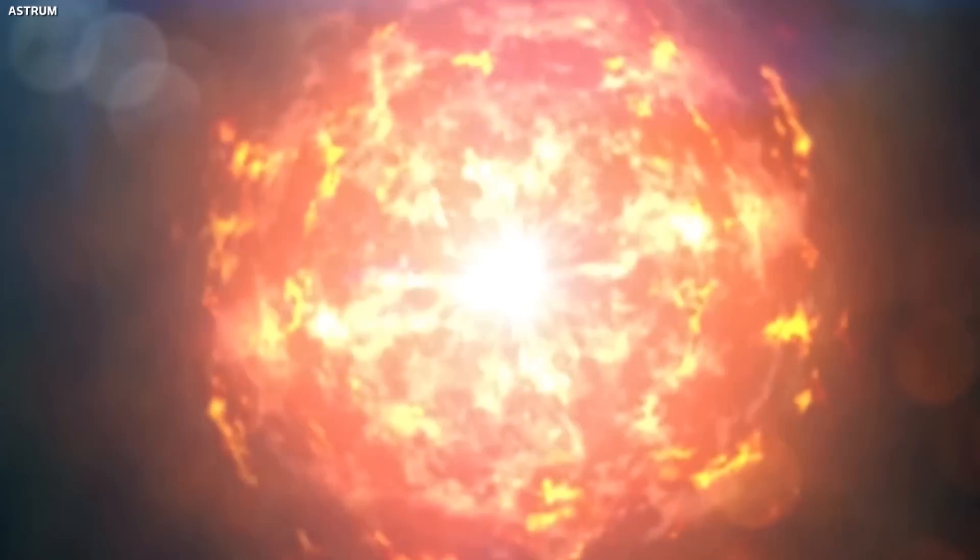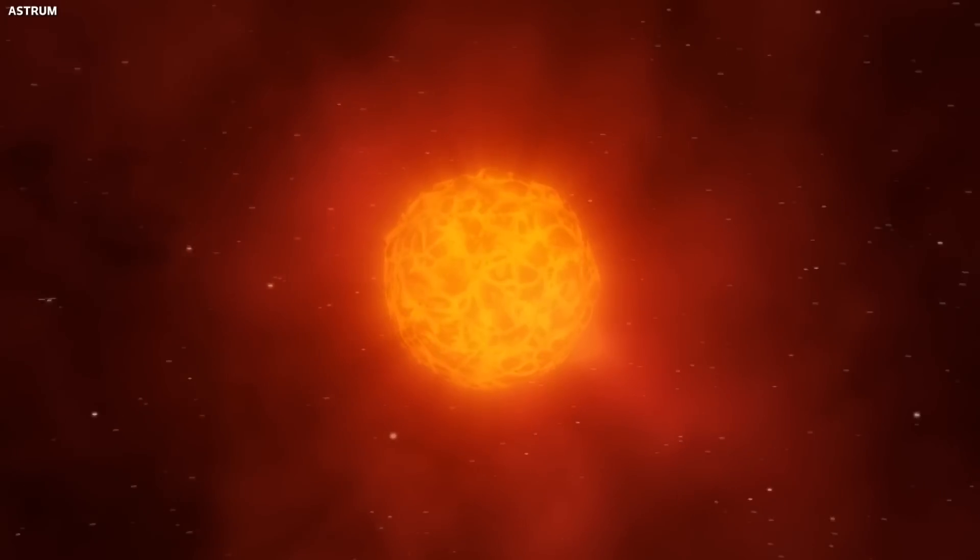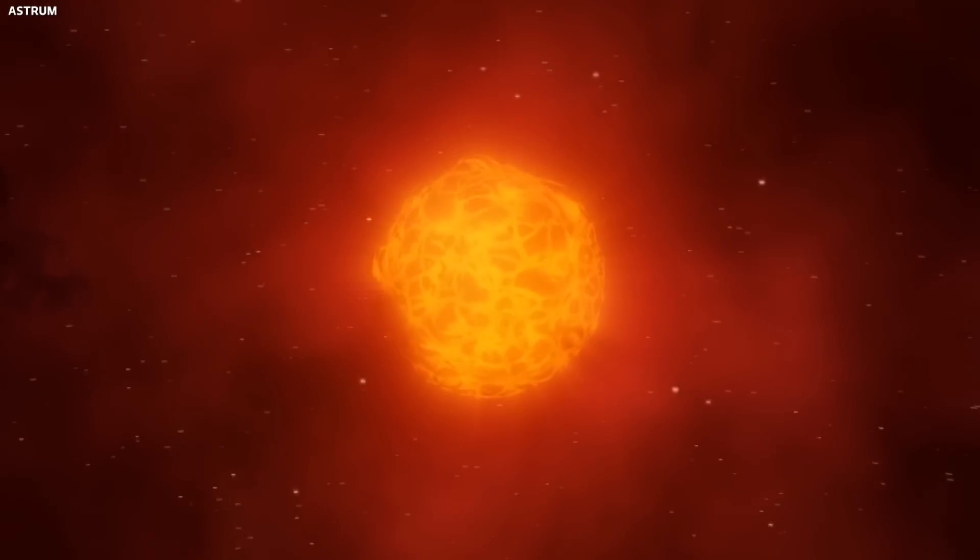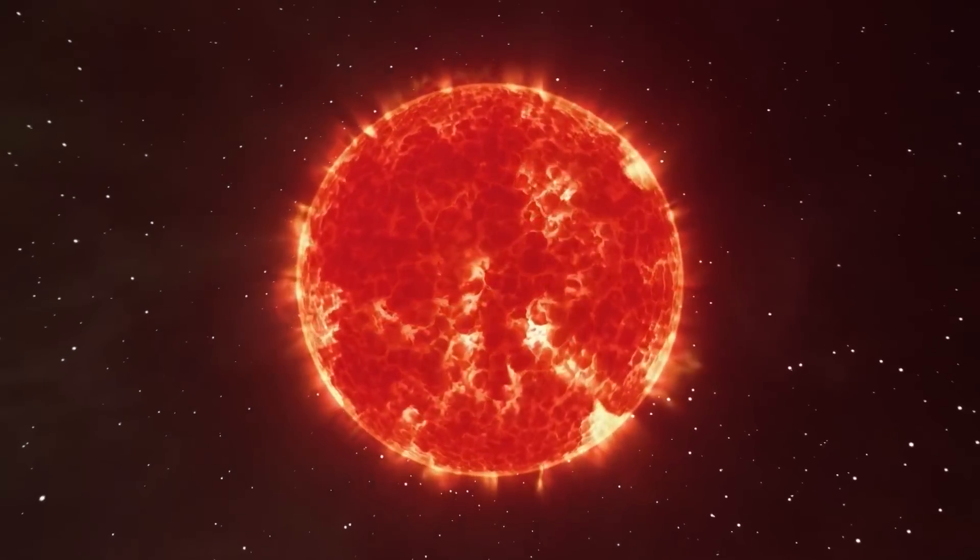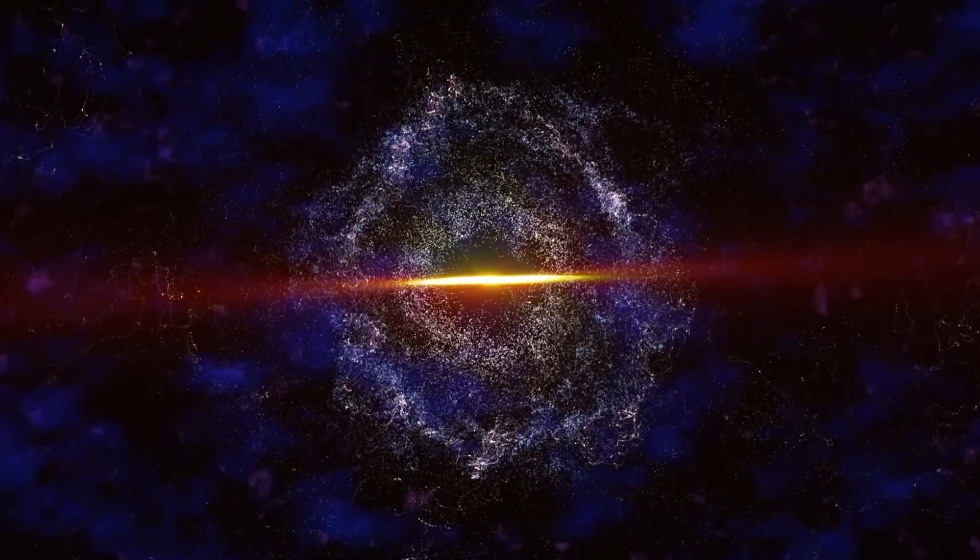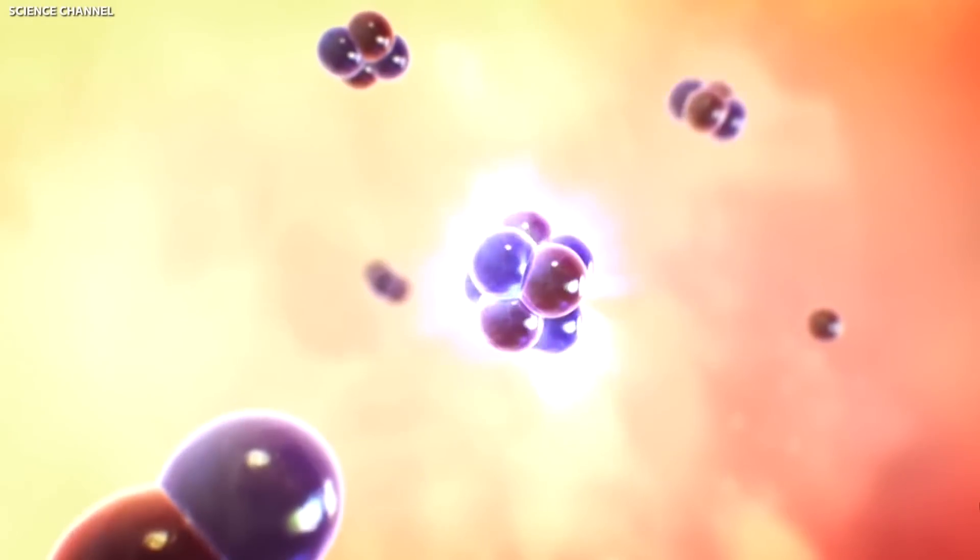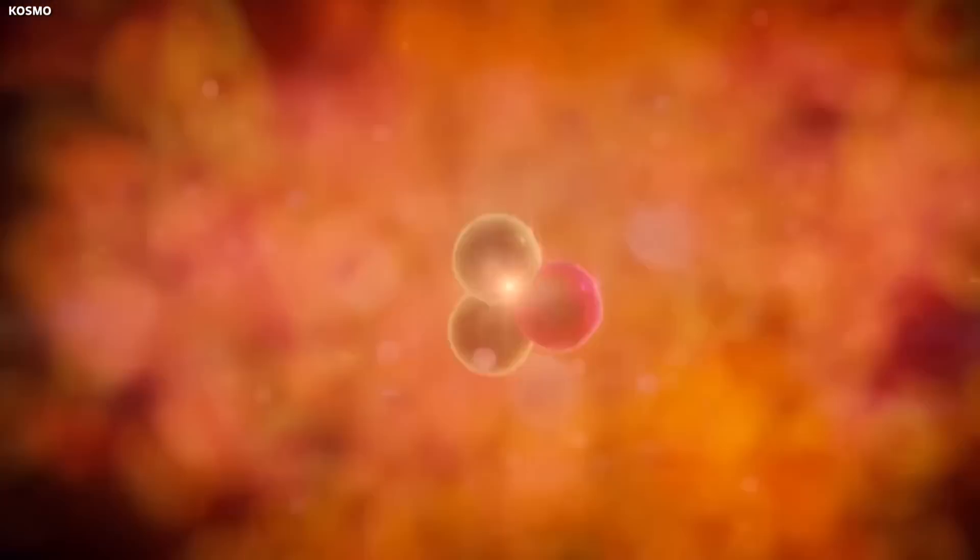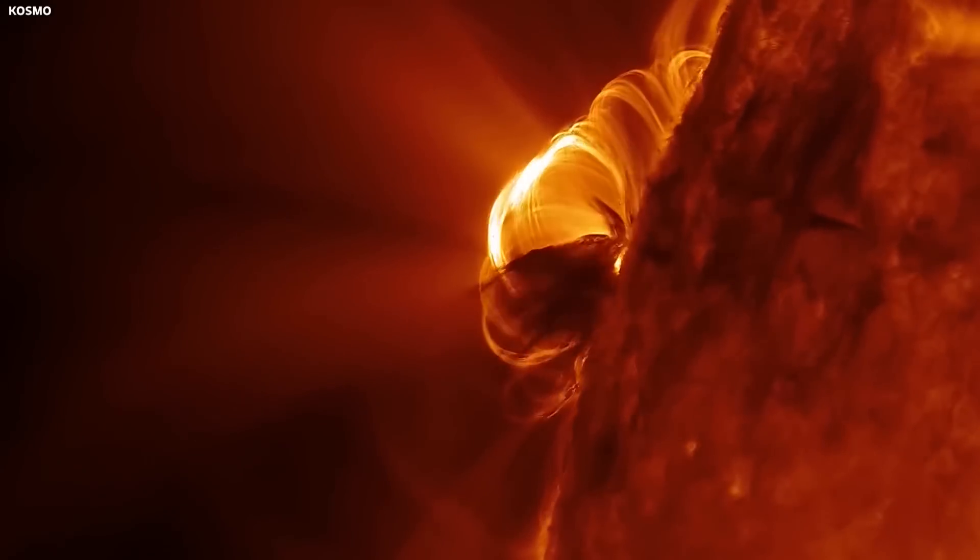One of the primary reasons for the belief that Betelgeuse might go supernova is its age and stage in the stellar life cycle. As mentioned earlier, massive stars like Betelgeuse have shorter lifespans than smaller stars. They burn through their nuclear fuel at an accelerated rate. Betelgeuse has already exhausted the hydrogen in its core and has moved on to burning heavier elements. Each successive phase of fusion produces less energy and lasts for a shorter duration.